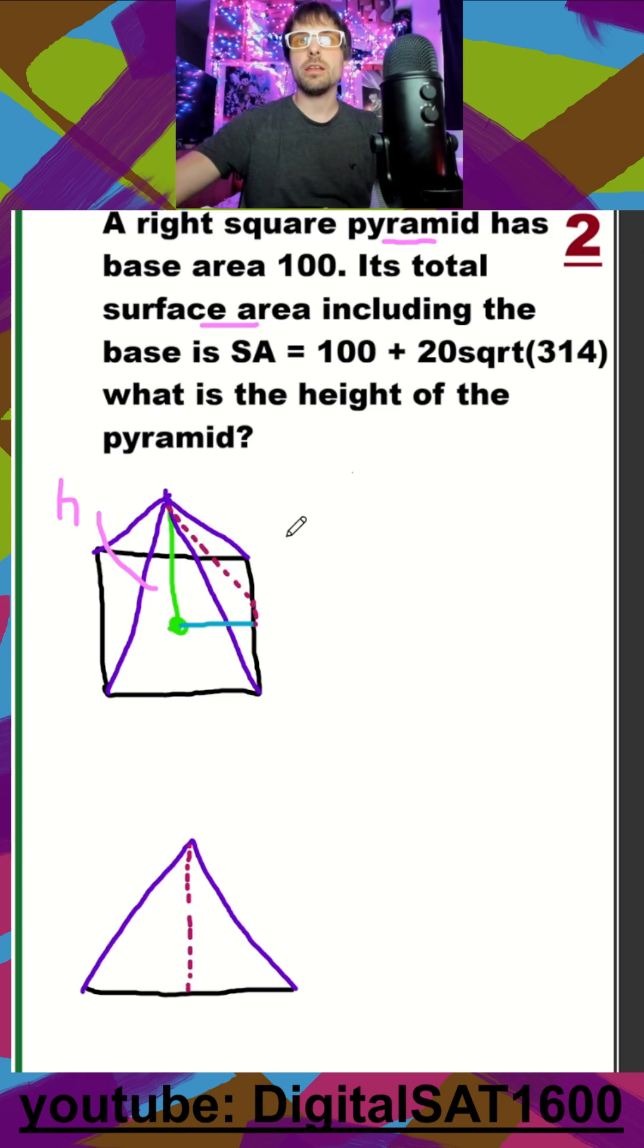What they're looking for here is they want this height. So we got two shapes down below. Again, the top one's going to be our three-dimensional pyramid with a square base.